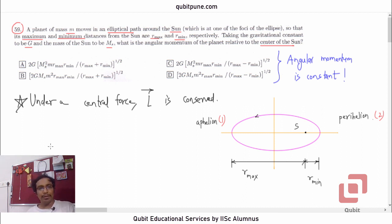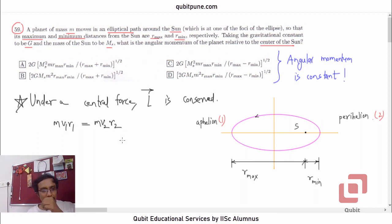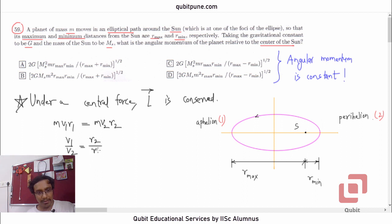Because angular momentum is conserved, we can say M·V1·R1 = M·V2·R2, or equivalently V1/V2 = R2/R1. That's what we get from angular momentum conservation.